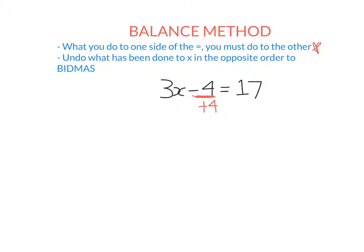The rule says what I do to one side I must do to the other. So if I've added 4 to the left hand side, I must also add 4 to the right hand side — that's why we call it the balance method, because you're keeping everything in balance. Minus 4 and plus 4 cancel each other out. I can't add 4 to 3x because they're not like terms, so on the left I just have 3x, and on the right I have 17 plus 4, which is 21.